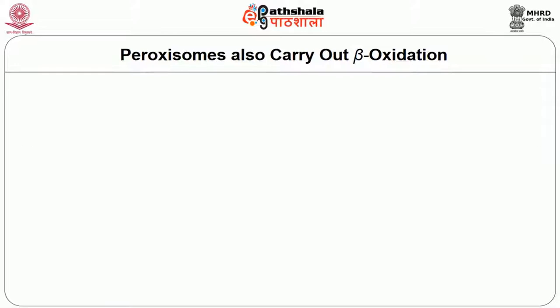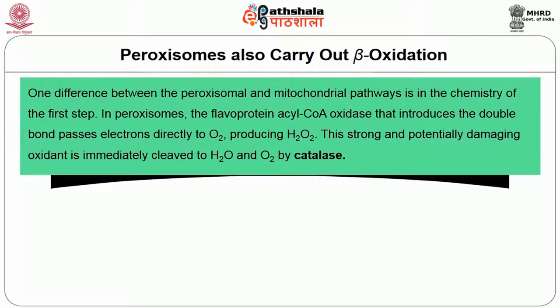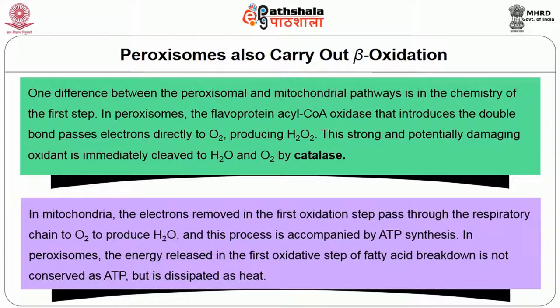One difference between the peroxisomal and mitochondrial pathways is in the chemistry of the first step. In peroxisomes, the flavoprotein acyl-CoA oxidase introduces the double bond and transfers electrons directly to oxygen, producing hydrogen peroxide. This strong and potentially damaging oxidant is immediately cleaved to water and oxygen by catalase. In mitochondria, the electrons removed in the first oxidation step pass through the respiratory chain to oxygen, producing water, and this process is accompanied by ATP synthesis.